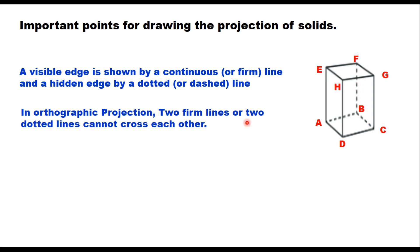The second rule of projection is that two continuous lines or two dotted lines cannot cross each other. If two lines cross each other in projection, one will be a continuous line and the other will be dotted. For example, lines BF and HG cross each other — one is visible and the other is not, so one will be dotted and the other a continuous line.